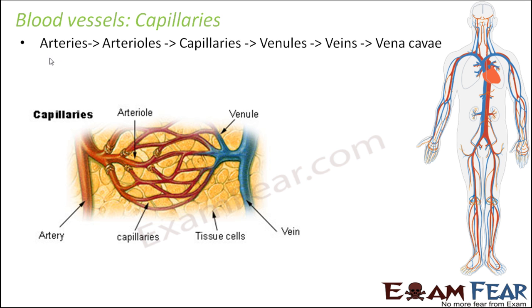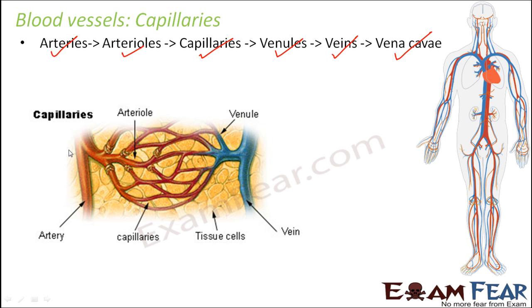The arteries we discussed branch out to form thinner tubes called arterioles, and these arterioles further branch out to form even thinner tubes called capillaries. These capillaries join together to form venules, and the venules in turn form veins, and the veins form the vena cava.